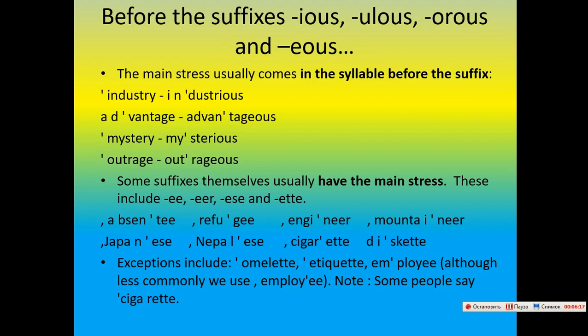Before the suffixes -ious, -ulous, -orous, and -eous, the main stress usually falls on the syllable immediately before the suffix. Examples: industrious, advantageous, mystery / mysterious, outrage / outrageous. Some suffixes themselves usually carry the main stress.